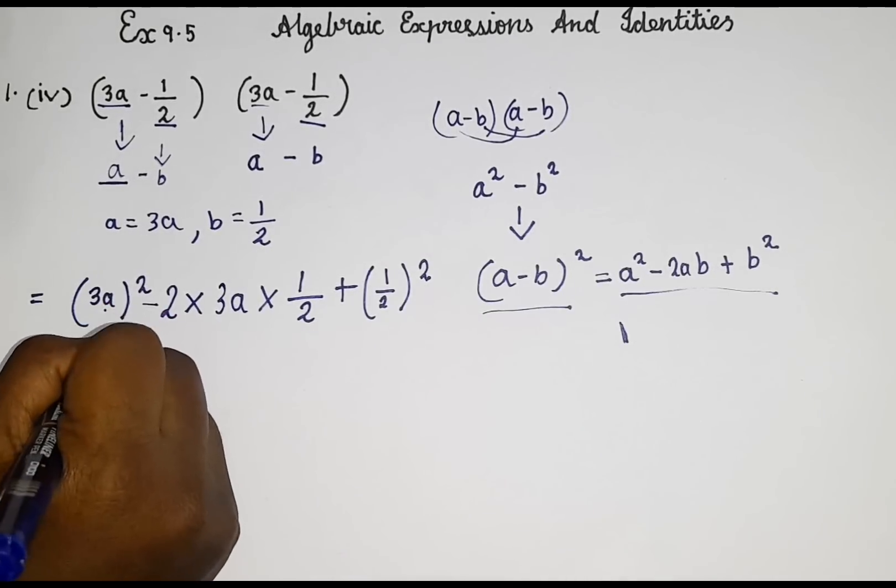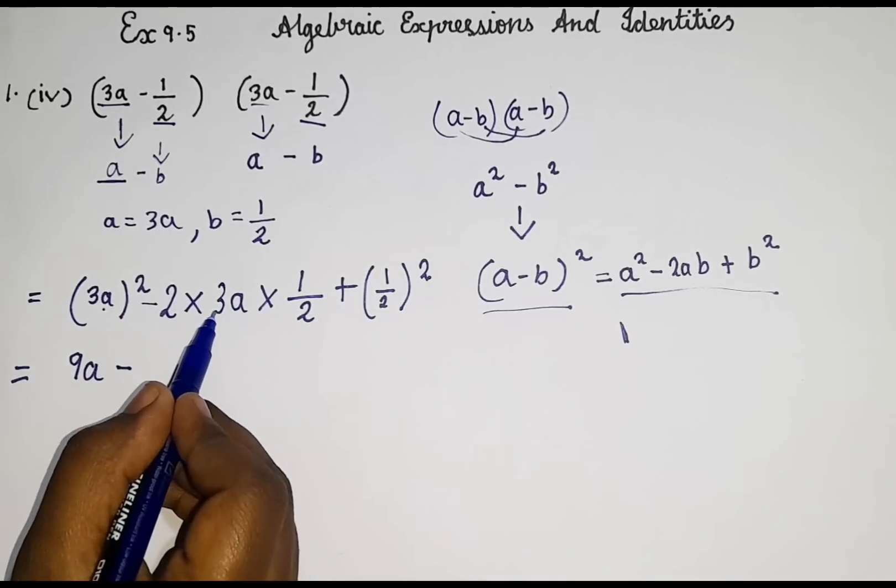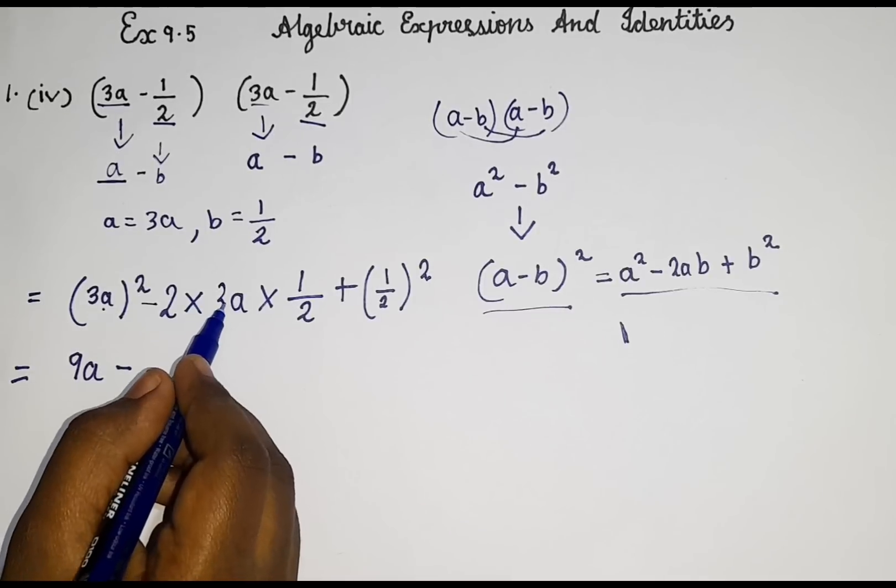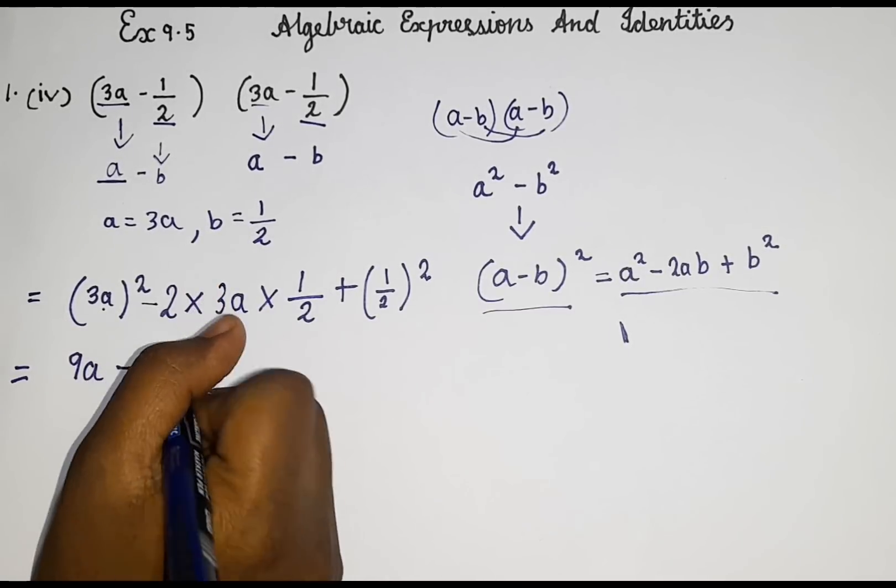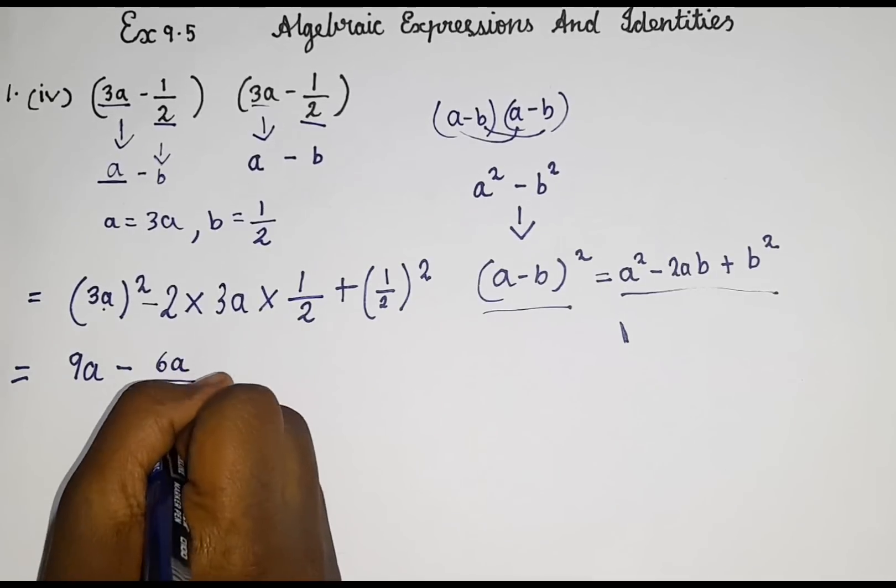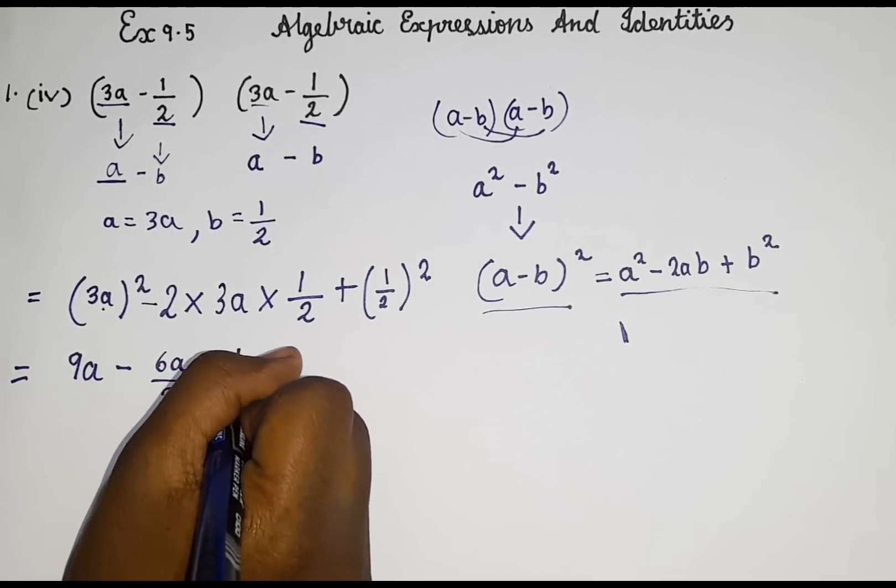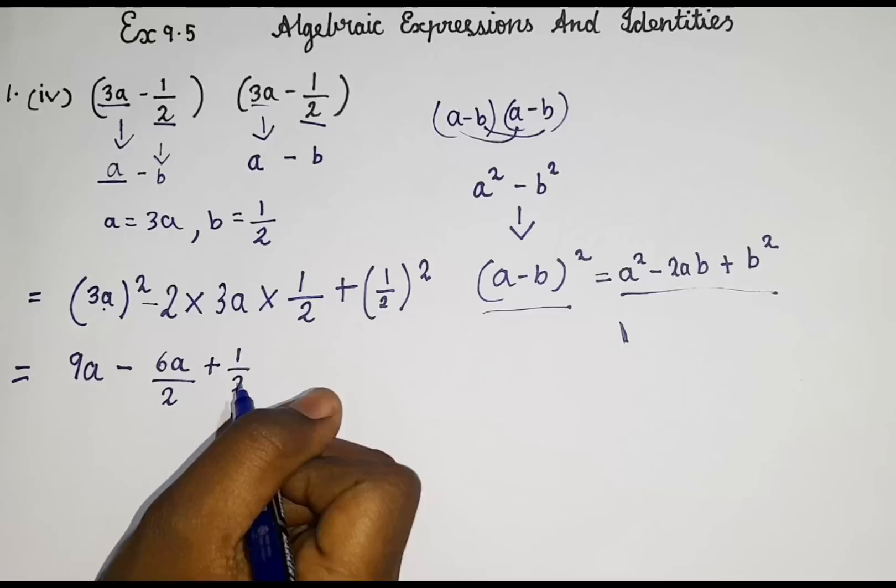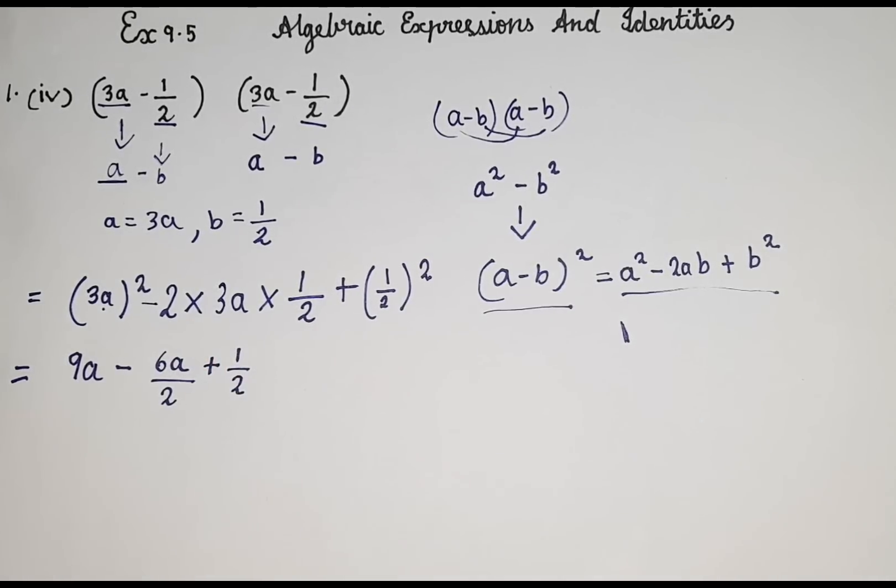3 square is 9. So 9a minus 2 into 3 is 6. So 6 into 1 is 6. And a we will get it as it is. Then by 2 plus 1 by 2. So here you can see we can cancel it. So we shall cancel it now.